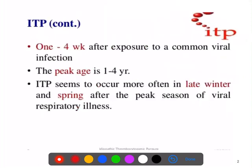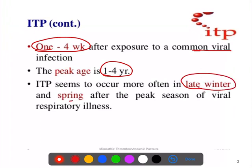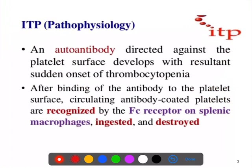There is a history of exposure to a common viral illness one month before the symptoms of thrombocytopenia. The peak age group affected in children is one to four years, and it is usually seen in late winter and spring season, as there is a peak incidence of respiratory illnesses during that time.